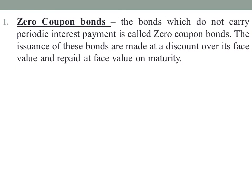The first one is zero coupon bonds. The bonds which do not carry periodic interest payment are called zero coupon bonds. The issuance of these bonds is made at a discount over its face value and repaid at face value on maturity.